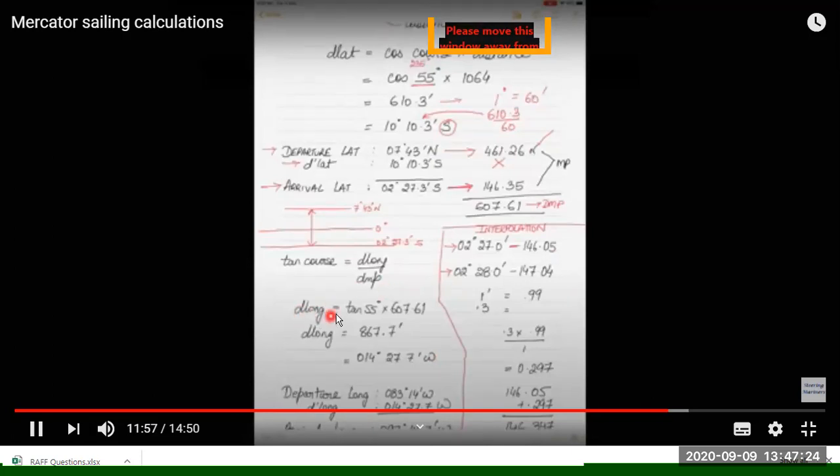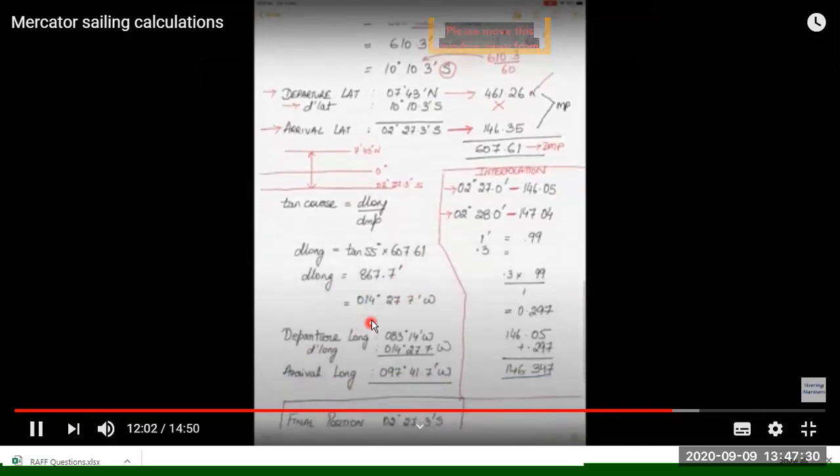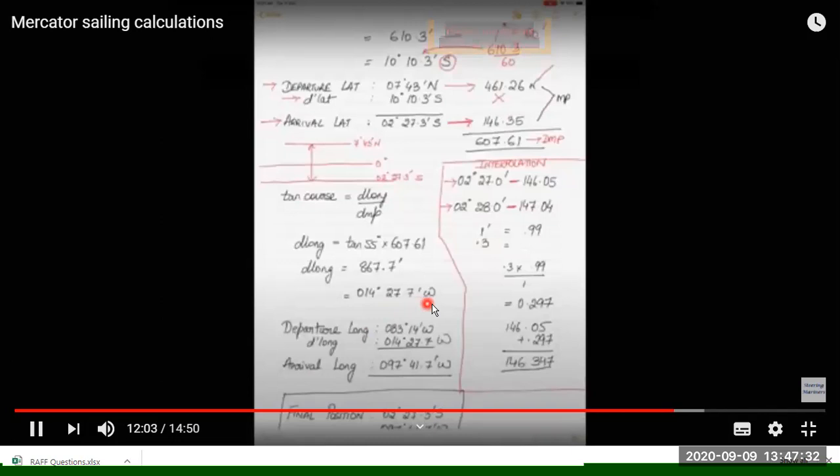So d long is tan 55 into 607.61. D long is 867.7, that is 14 degrees 27.7 minutes. Departure longitude was 83°14'W and d long is 14°27.7', so final longitude will be going more westward: 097°41.7'W.